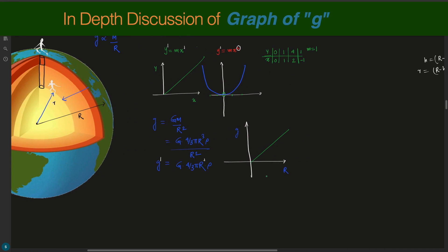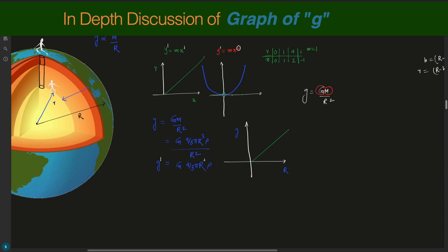Now we'll look at the variation of gravitational acceleration when moving outside the Earth. We use the formula g = GM/r². When moving away from the Earth, mass is constant and G is also constant, so g is only varying with r². Therefore, g is proportional to 1/r².